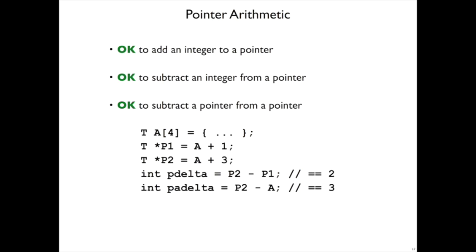It's also okay to subtract a pointer from a pointer because that's getting the difference between the two pointers. That's how many elements apart they are. So if I have this array a and I set p1 to be pointing to the second element, the one at index 1, and p2 points at the one at index 3, then I can subtract p2 minus p1, and that makes sense.